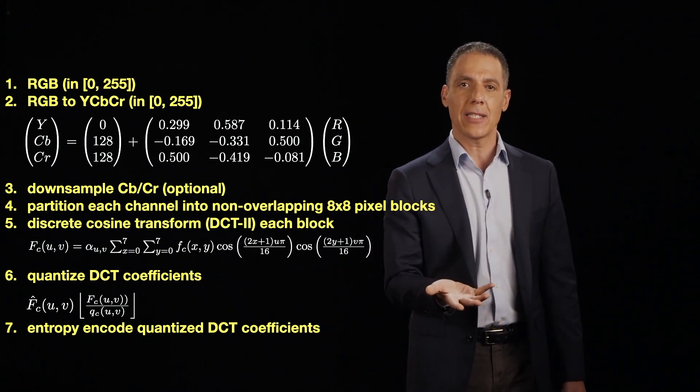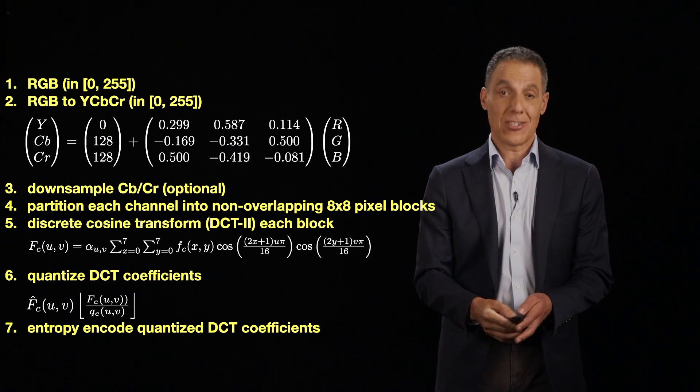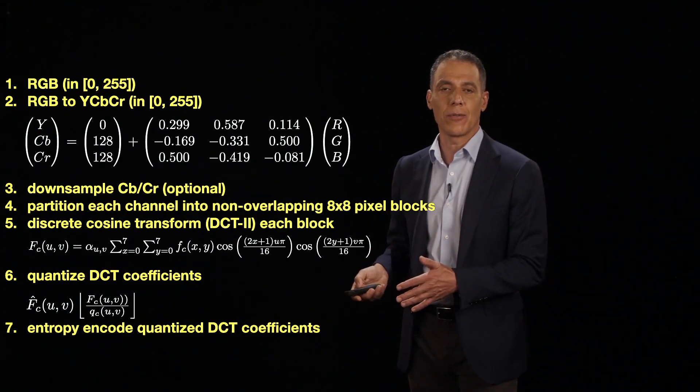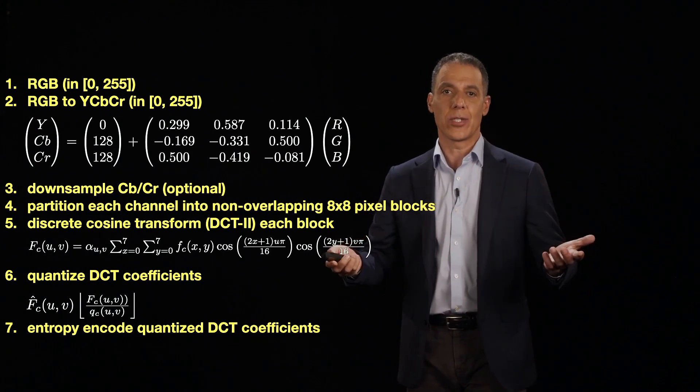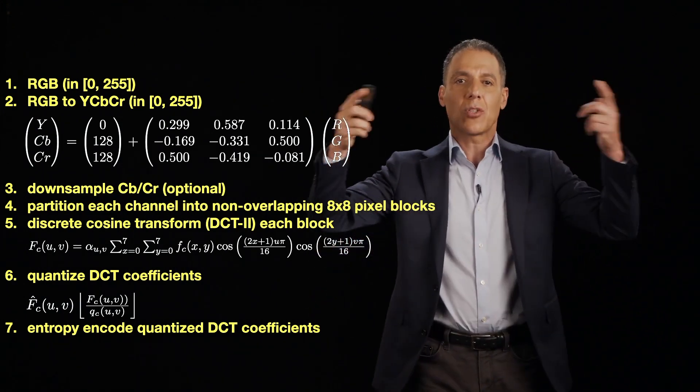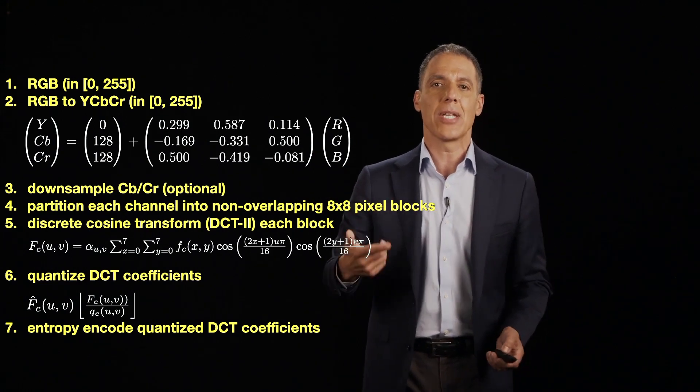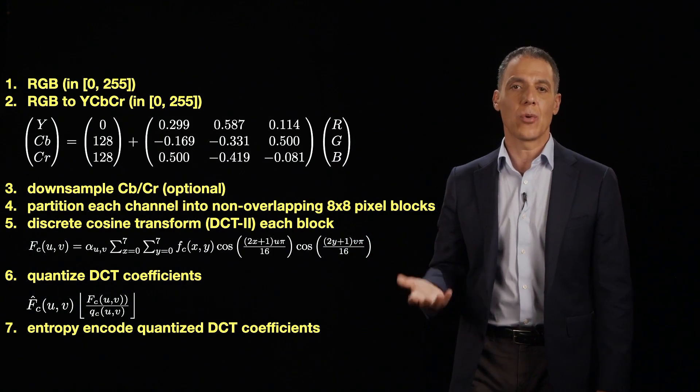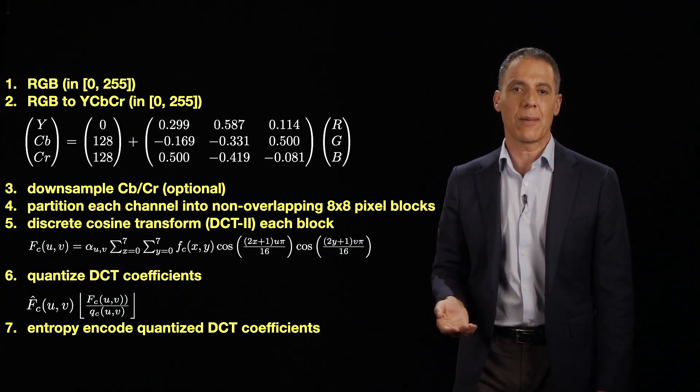Obviously on the unpacking, what's stored in a JPEG has nothing to do with pixels. What it is is quantized DCT coefficients, which you then have to scale back to the original scale, inverse DCT, and then go from luminance to chrominance. And all of that is happening in real time on your device because the savings from that is so significant that it's worth the extra computation.